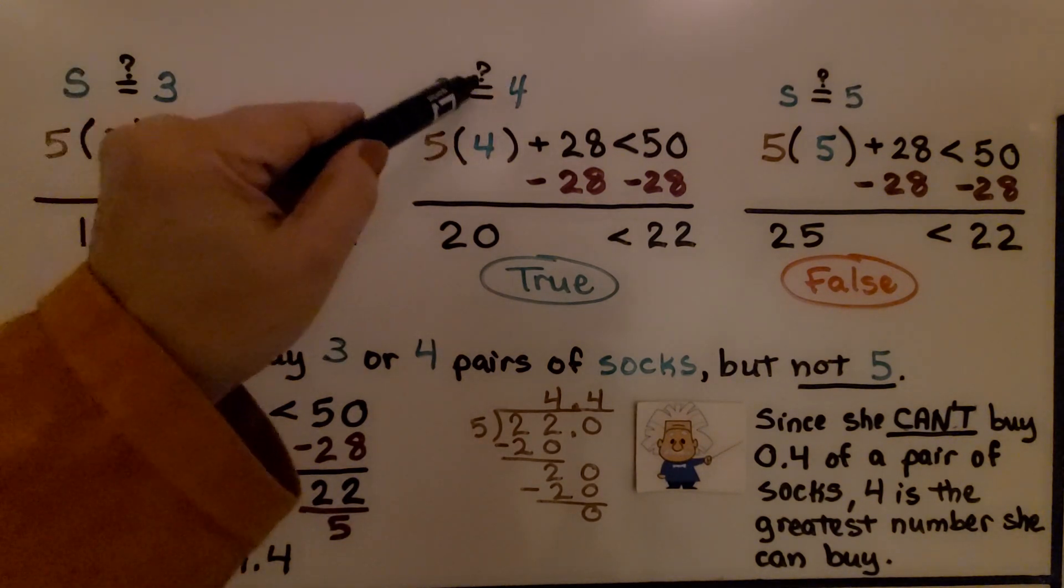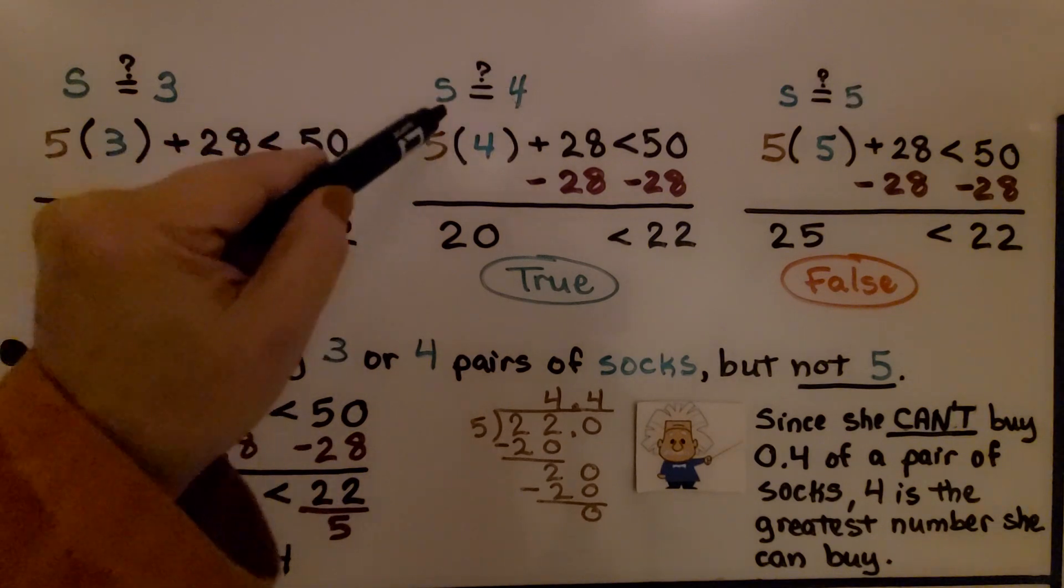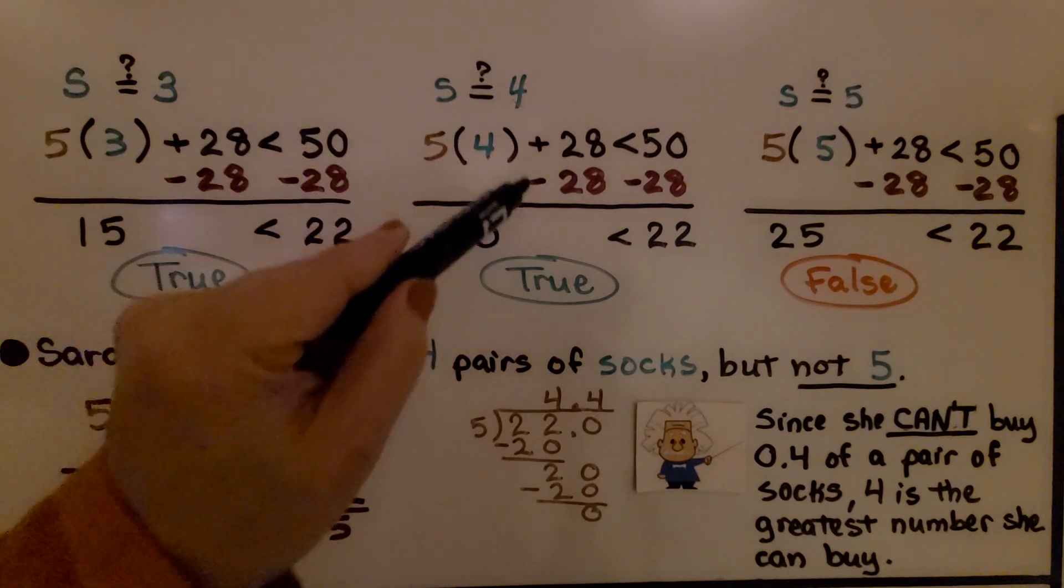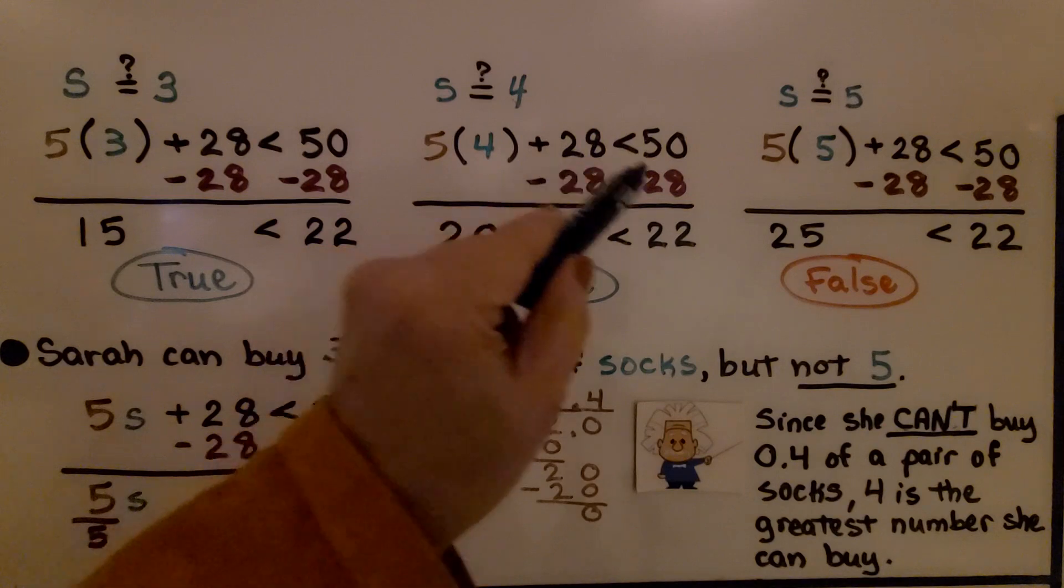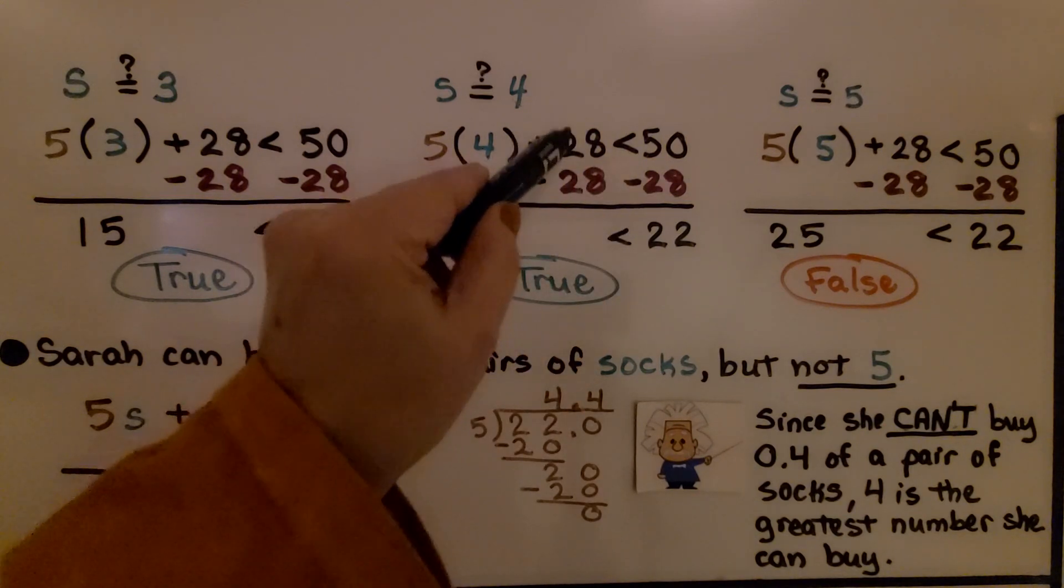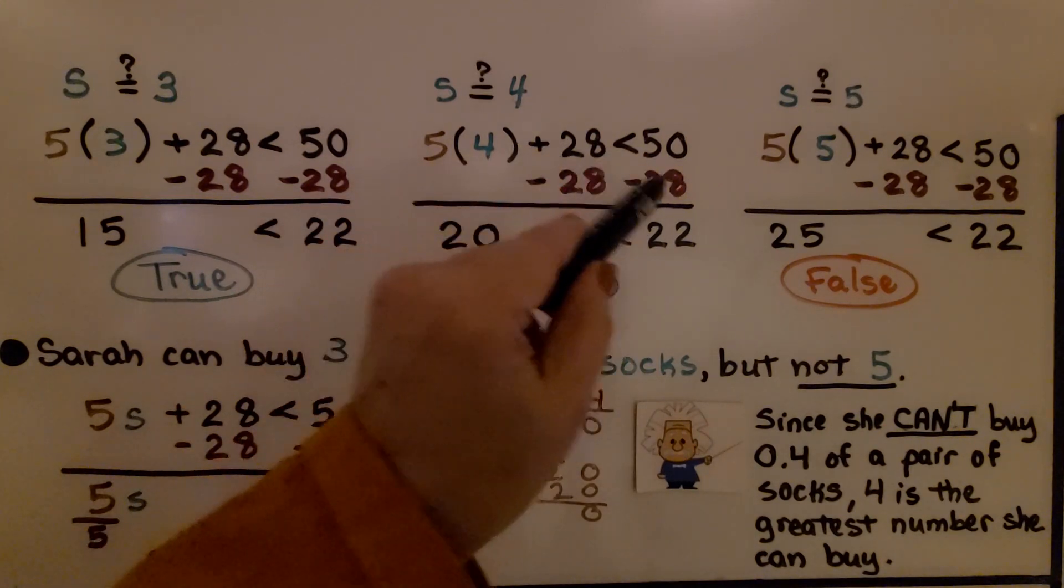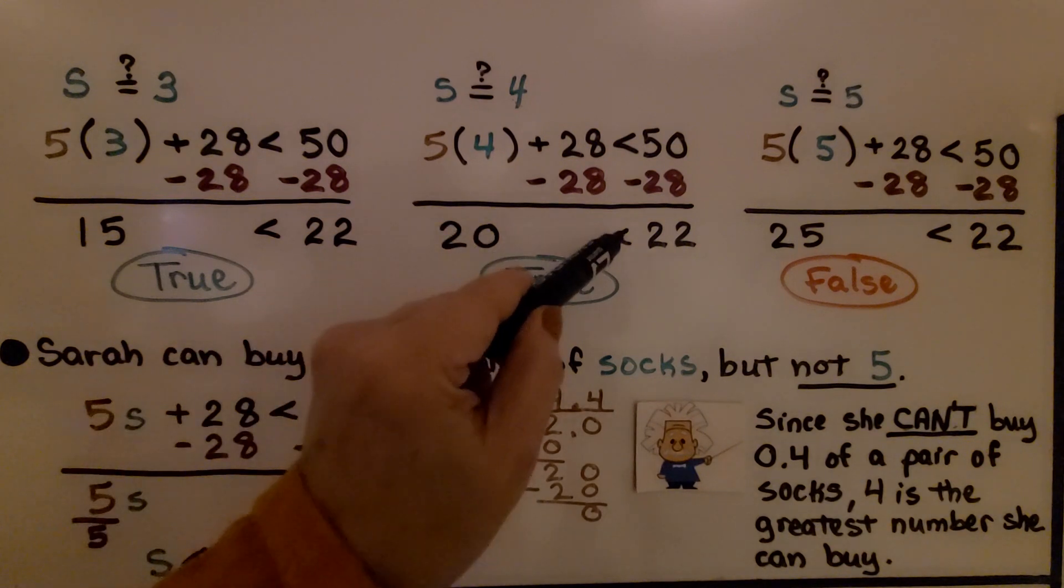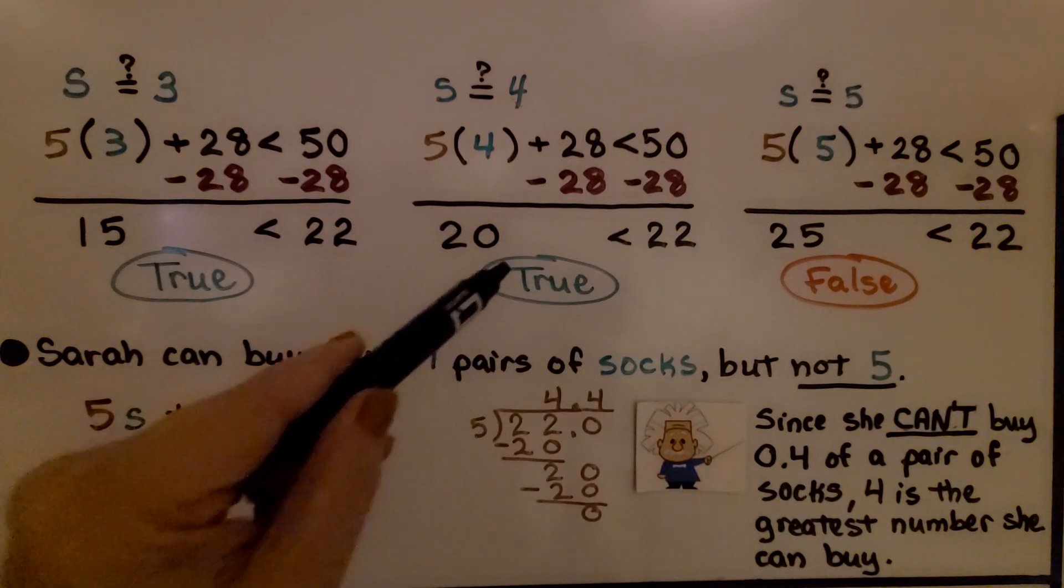What about 4? Is S equal to 4? We do 5 times 4, which is 20, and we're going to remove this 28, this plus 28 by doing minus 28, minus 28. We get 20 is less than 22, and that's true.